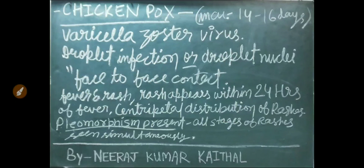Quick review of chickenpox: its incubation period is 14 to 16 days. Caused by varicella-zoster virus. It is a droplet infection or droplet nuclei, spread by face-to-face contact. Signs and symptoms include fever and rash. Rash typically appears within 24 hours of fever. Rashes show centripetal distribution. Pleomorphism is present — meaning all stages of rashes are seen simultaneously.